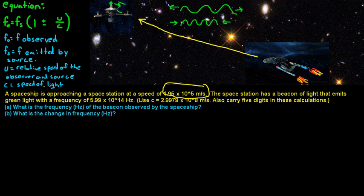So we say f_o is going to equal f_s, which is the frequency emitted by the source, and that is 5.99 times 10 to the 14th hertz times 1 plus or minus.